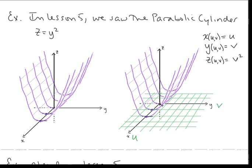We're saying let x be u and let y be v. Then how are we going to define z? Well, we know that z must be equal to y squared. Since y is v, z is equal to v squared. So now we have this mapping from the u, v plane into three-dimensional space. For every point in this plane, we have a point in three-dimensional space, and we have our parabolic cylinder.